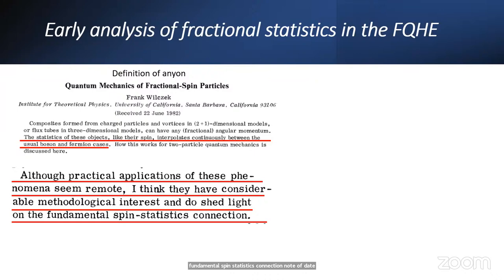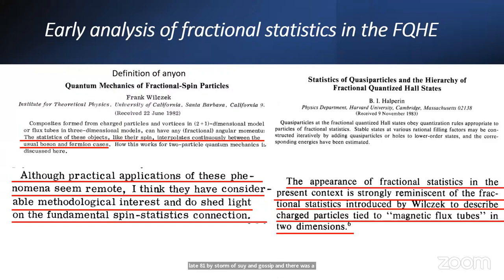The first observation of the fractional effect was in late 81 by Stormer, Tsui, and Gossard. And there was a flurry of theoretical activity trying to explain quantization at fractional filling, of course, culminating in Laughlin's famous wave function paper. Shortly thereafter, Bert Halperin was trying to develop and explain the daughter states. There's first a one-third state, and then there was a proliferation of new states being discovered.